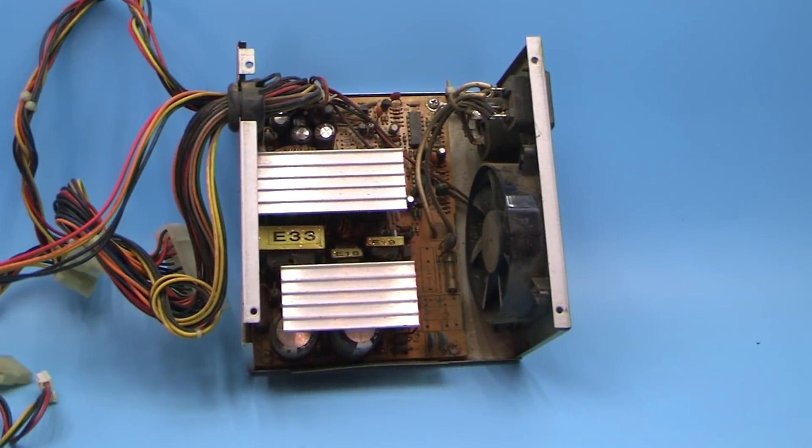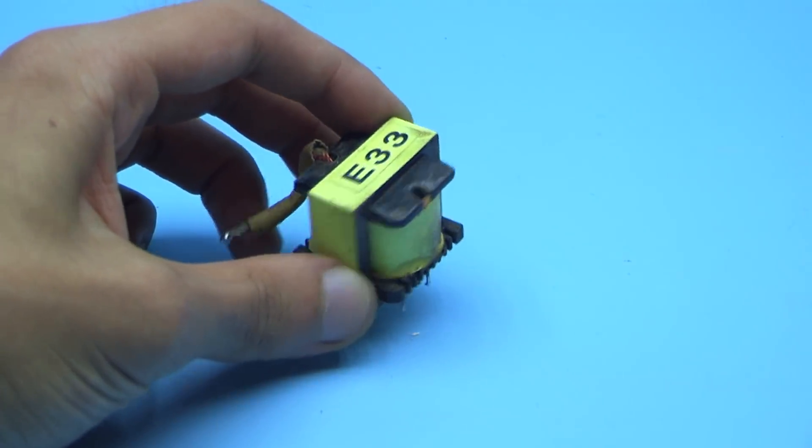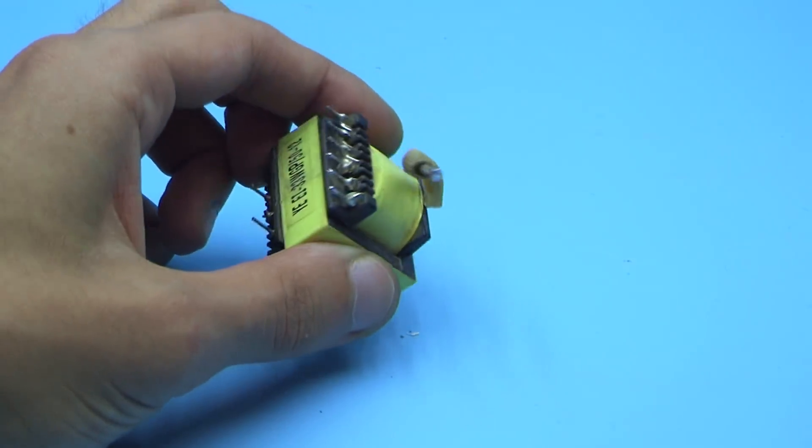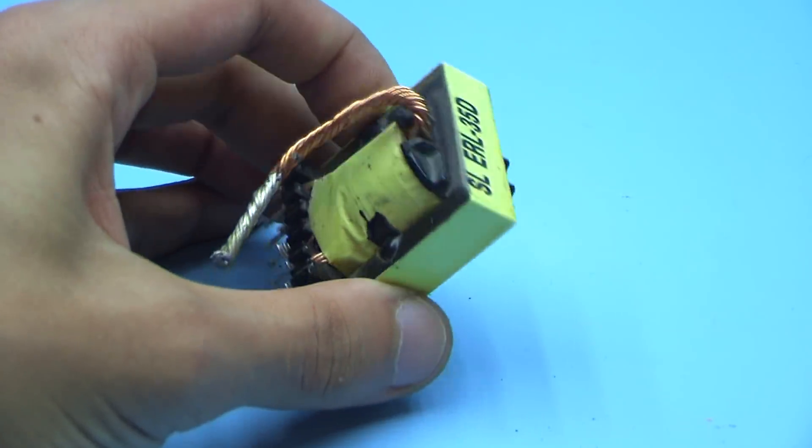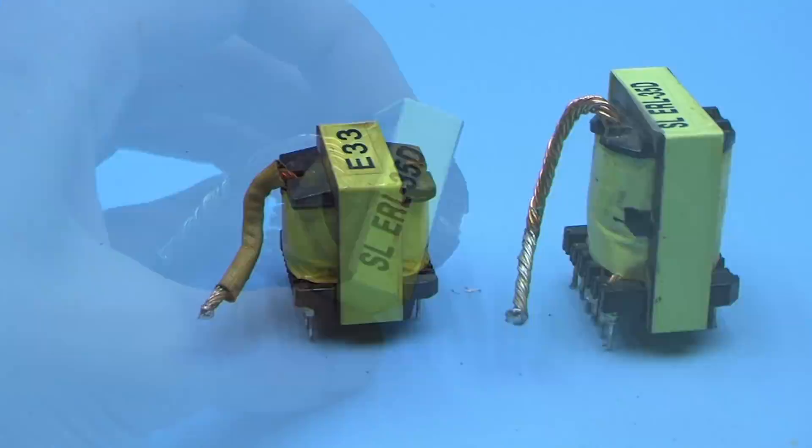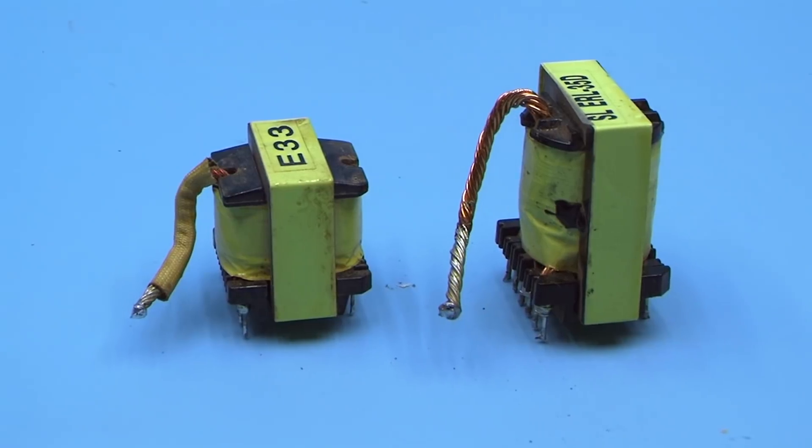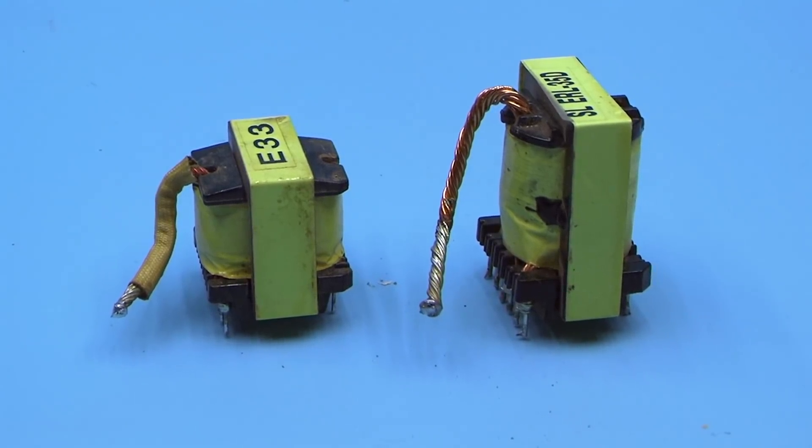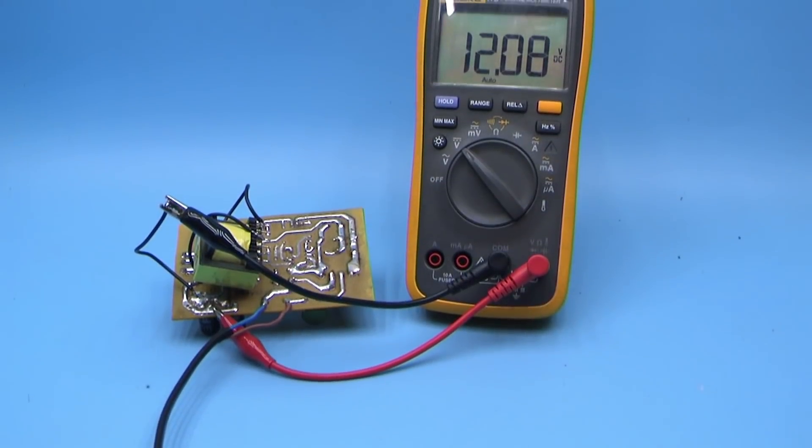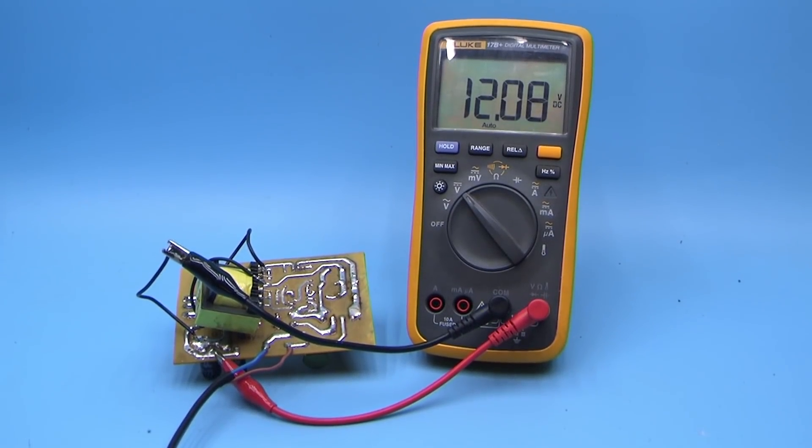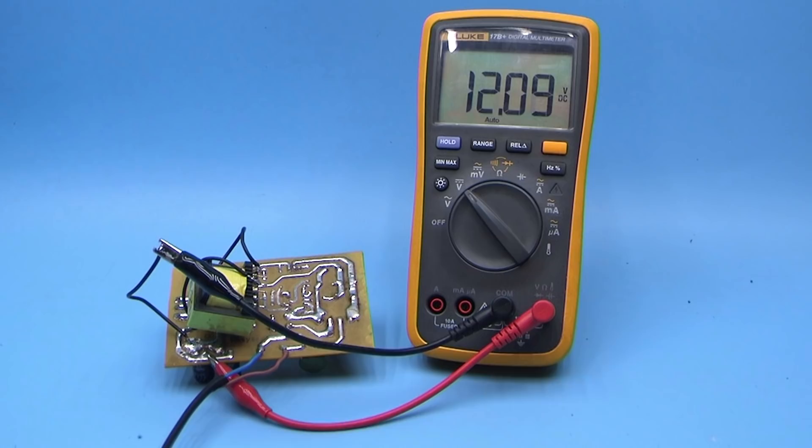The most important is the transformer. You can take it from any computer power supply. I found this. You can use N-transformers of the extended type, such of input in blocks ATX 450W. It is also not necessary to rewind them. Standard windings will allow obtaining a voltage at the output of about 12 to 15V.